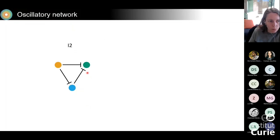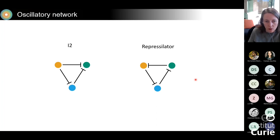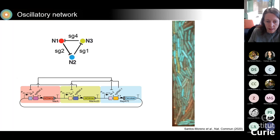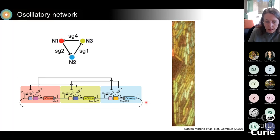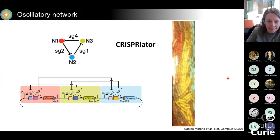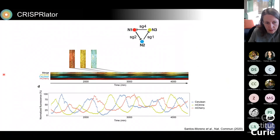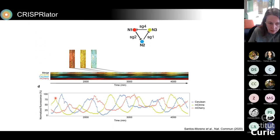We built the I2 topology and then realized it is very similar to the famous repressilator topology — a network that can produce temporal oscillations. It's just the orientation of one of the interactions that differs. My postdoc Javier put together a network with the repressilator topology, and when we transformed cells with this plasmid and watched them in a microfluidic device, we can see nice oscillations. We call this network the CRISPRlator.